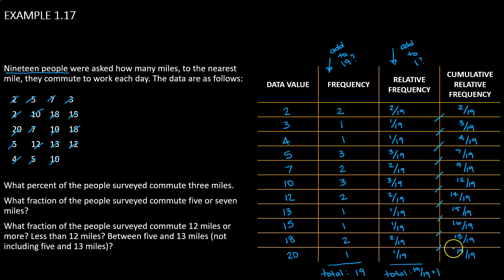And we can make sure that we've completed that column correctly by ensuring that the very last entry for the last row in that cumulative relative frequency column is equal to 1, which is 19 over 19. Okay, we have our table complete.